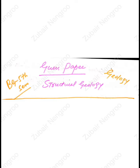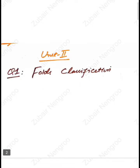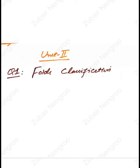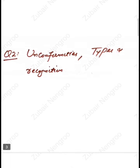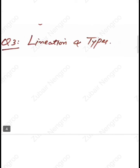Without wasting much of your precious time, we will discuss the most important questions in each unit. First we have Unit 2. The most important questions include: question number one, define fold classification; question number two, unconformities, its types and recognition; and question number three, lineation and its types.